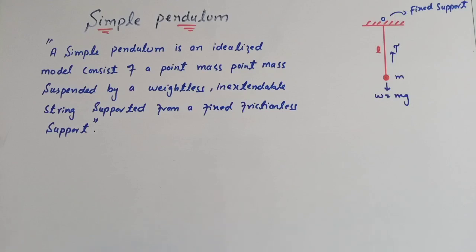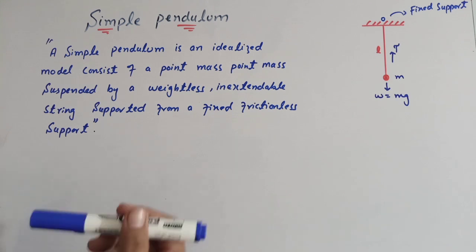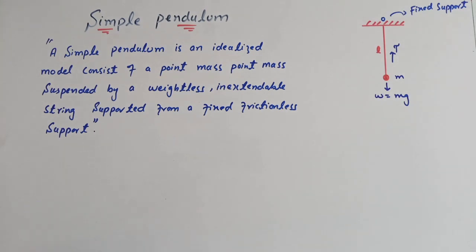Assalamu alaikum students, kaysi ho? Class 10 Physics, Chapter 1: Simple Harmonic Motion and Waves — topic: Simple Pendulum. A simple pendulum is an idealized model. It consists of a point mass suspended by a weightless, inextensible string supported from a fixed, frictionless support.